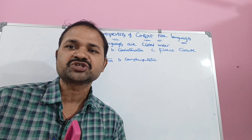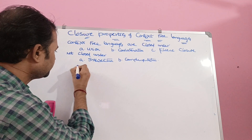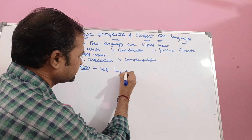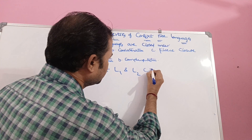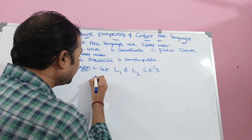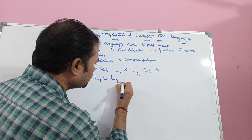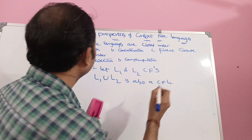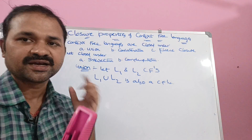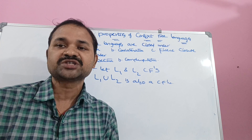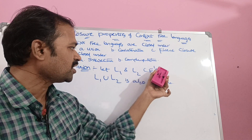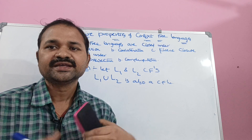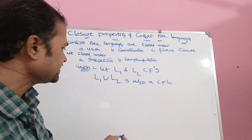Context-free languages are closed under union. Let L1 and L2 be two context-free languages. Then L1 union L2 is also a context-free language. That is why we can say that context-free language is closed under union. Let us see this with the help of an example.